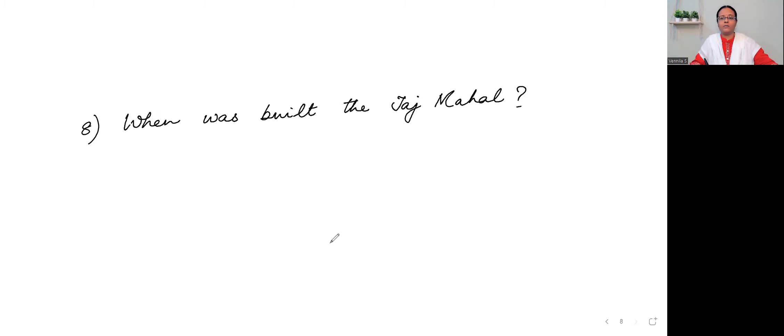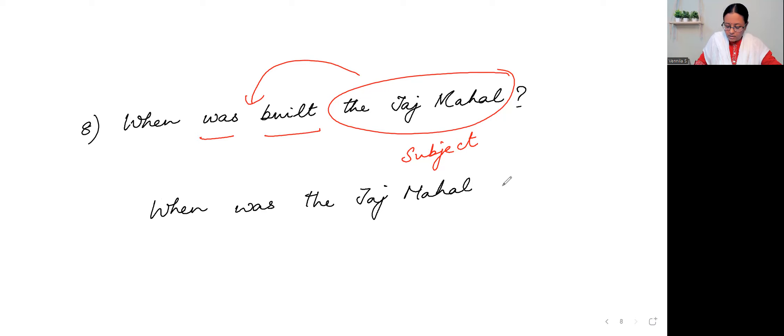When was built the Taj Mahal? This is the subject. Where is the helping verb and main verb? When was the Taj Mahal built? This is the passive voice. When was the Taj Mahal built? So in this case, there is a doubt. Was is the helping verb, was is the main verb. The Taj Mahal is the subject. Okay. Right.